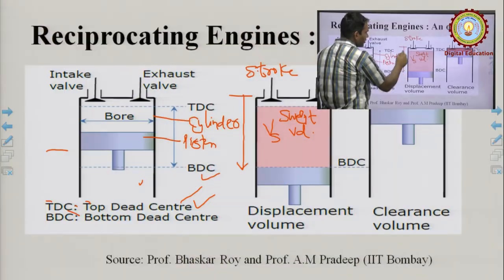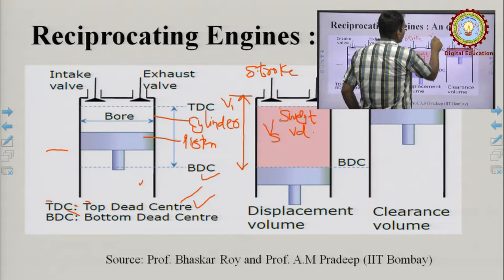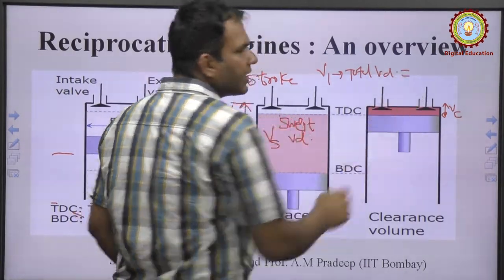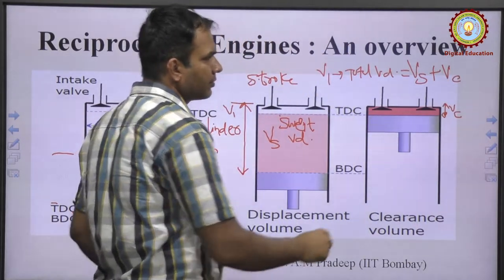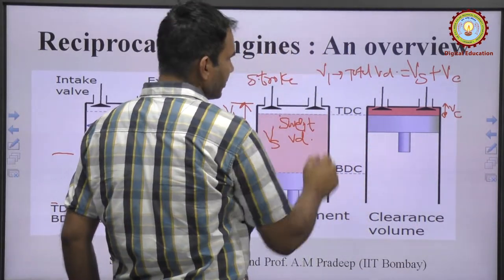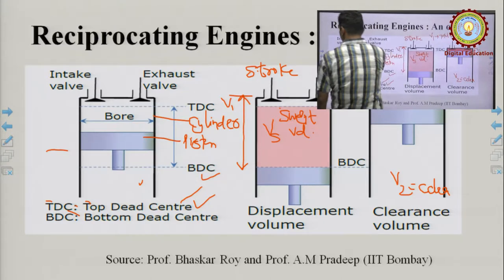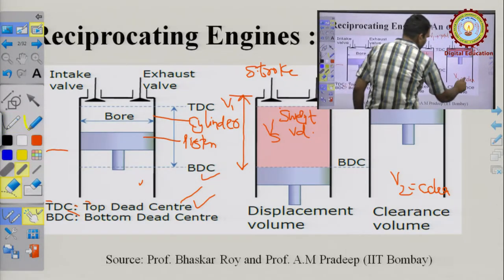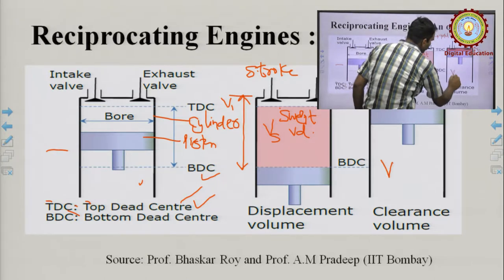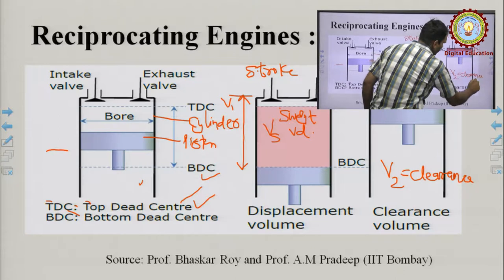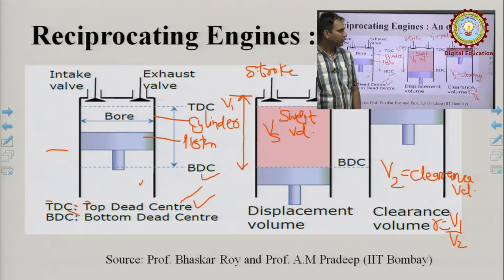The total volume V₁ of the cylinder equals swept volume plus clearance volume. V₂ is the clearance volume, and the ratio V₁ to V₂ is called the compression ratio.